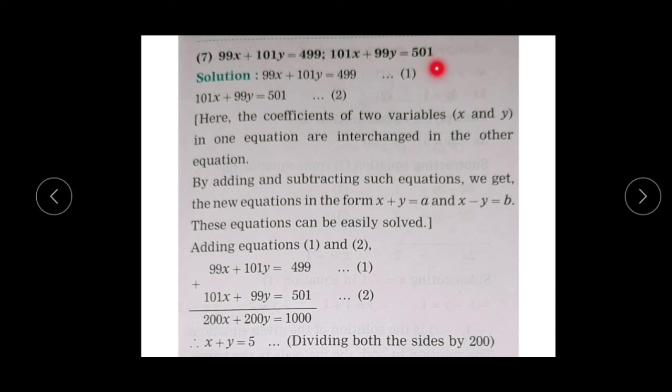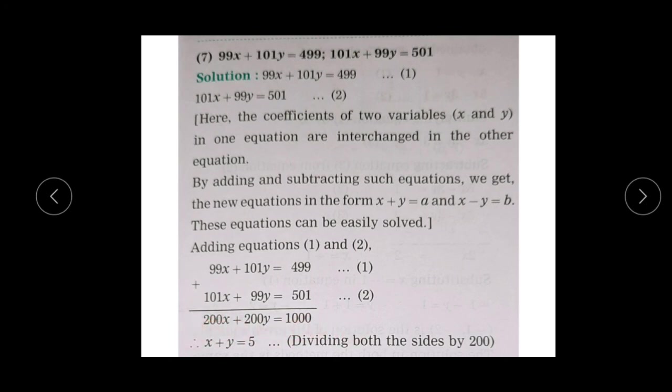Now consider: 99x + 101y = 499 and 101x + 99y = 501. Observe that the coefficient of x in one equation equals the coefficient of y in the other — they are interchanged. So first add the two equations: 99x + 101x = 200x, 101y + 99y = 200y, and 499 + 501 = 1000. Dividing by 200 gives x + y = 5, which is equation number 3.